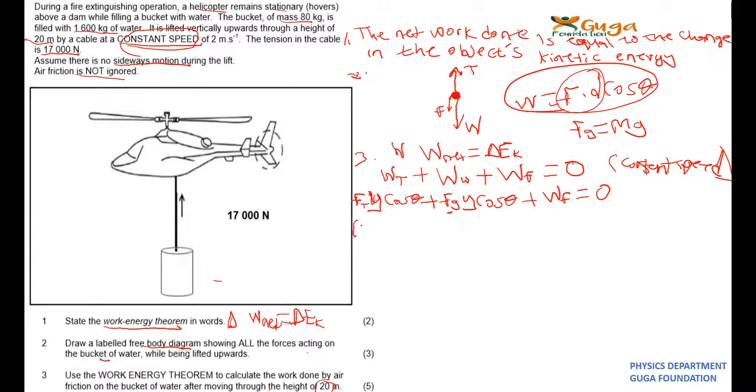You have got the force of 17,000 and then we multiply by height which is 20, times cosine of zero degrees because the force is in the same direction. Your tension is going up, so it means that your force is in the same direction as the direction of the motion.